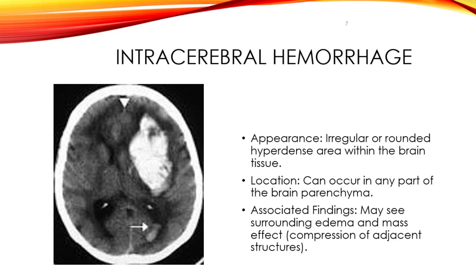Intracerebral hemorrhage presents as hyperdense areas within the brain tissue. It can have a pressure effect on the normal brain resulting in a significant midline shift, as depicted in the picture with an arrowhead. It can also be associated with intraventricular hemorrhages, as shown in the picture with an arrow.